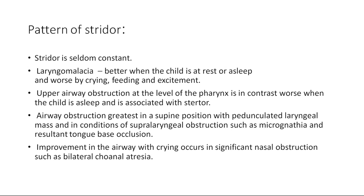Airway obstruction is greater in the supine position with pedunculated laryngeal masses and conditions such as micrognathia with resultant tongue-base occlusion. Improvement in the airway with crying occurs in significant nasal obstruction, such as bilateral choanal atresia — because in bilateral choanal atresia, the only route through which the child can take air is the oral cavity. When crying, the child breathes through the mouth, so there is improvement in the stridor. When silent or asleep, the child cannot breathe through the nose due to bilateral choanal atresia.